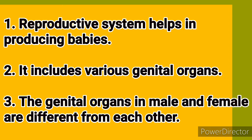The reproductive system helps in producing babies. It includes various genital organs. The genital organs in males and females are different from each other.